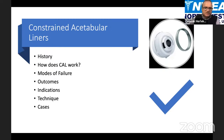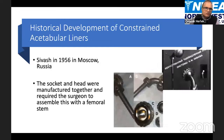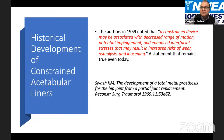The first reference about constrained liners was in 1956 in Moscow, Russia — an all-metal device where the socket and head were manufactured together, assembled with a femoral stem intraoperatively. The first publication was in 1969, and authors noted a constrained device may be associated with decreased range of motion, potential impingement, and enhanced interfacial stresses resulting in increased risk of wear, osteolysis, and loosening — a statement that remains true even today. Clinical use increased from the 1980s, and the modern design requires the surgeon to snap the head into the liner at reduction, with a locking ring secured around the rim of the liner.